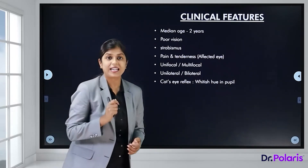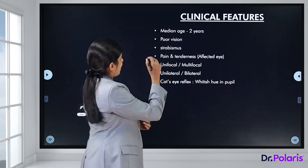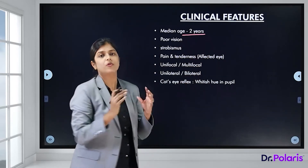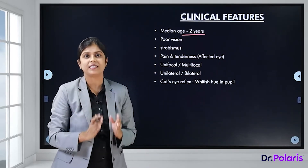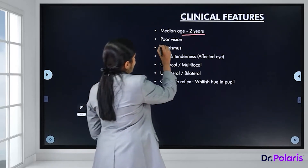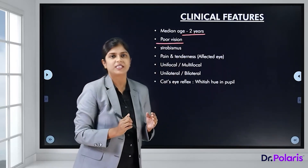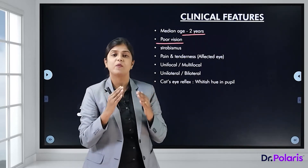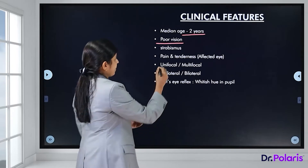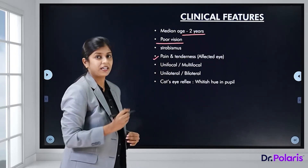The median age at presentation is two years — retinoblastoma is a tumour of childhood. Patients may present with poor vision or strabismus, meaning both eyes do not look in one direction at the same time. There can also be pain and tenderness of the affected eye.